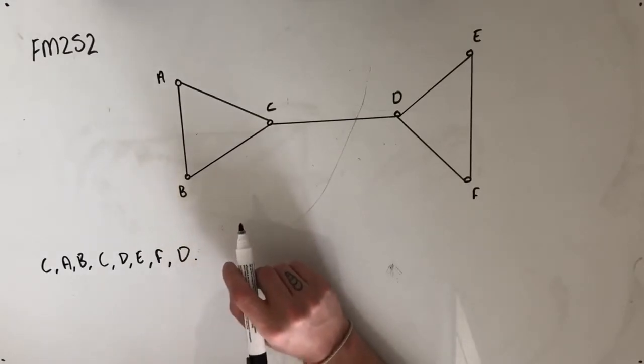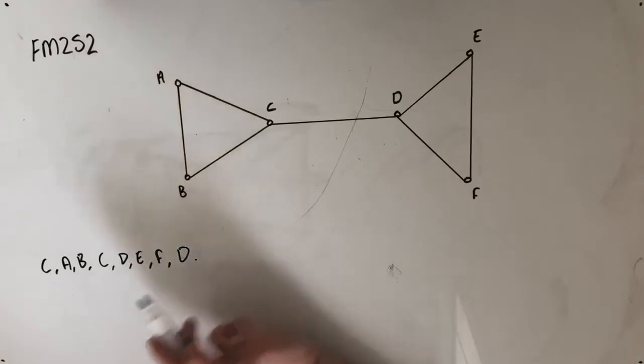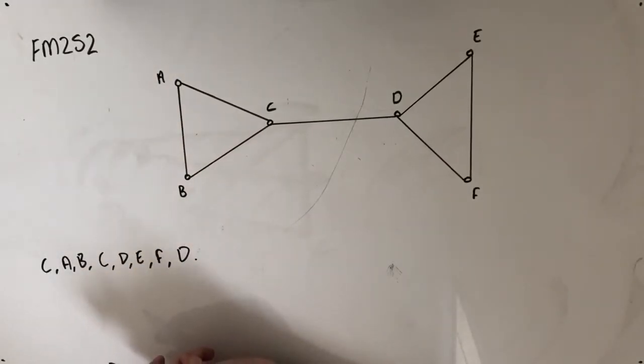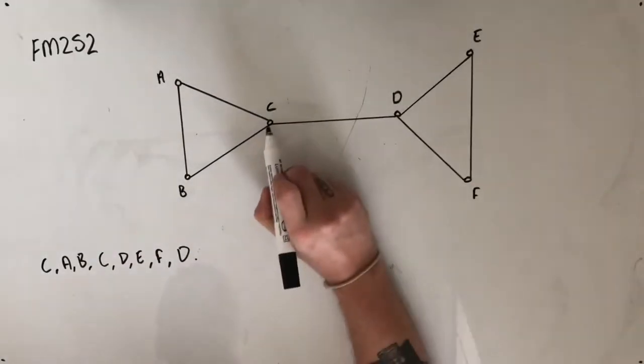A postman starts at roundabout C, then proceeds to travel to A, B, C, D, E, F, D. The mathematical term for this route is what? So we've been told that the postman is starting at C.